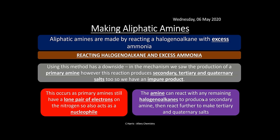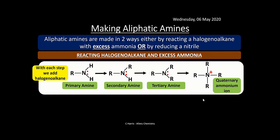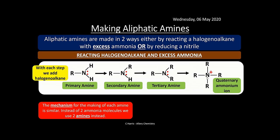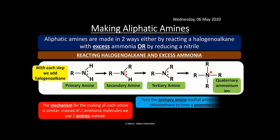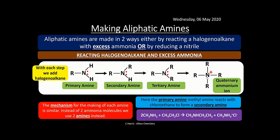Here you can see how each amine type is produced: a primary amine with its lone pair reacts with a haloalkane to form a secondary amine, which still has a lone pair, then a tertiary amine still has a lone pair, and finally the quaternary ammonium ion has no lone pairs so it cannot react further. The reaction producing secondary amines from primary amines is shown here: primary amine plus haloalkane gives secondary amine plus a salt. The mechanism is similar throughout, but you just need to know the reaction for OCR.